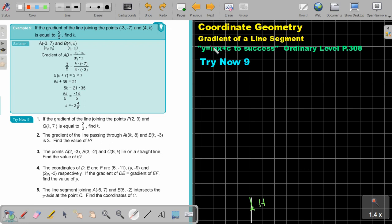We're now going to look at the final part of gradient of a line segment. You will find this on page 308 in the Namibia Ordinary Level Mathematics textbook y equals mx plus c to success.